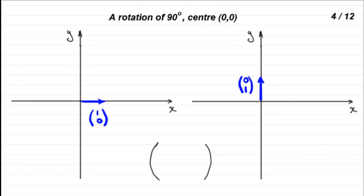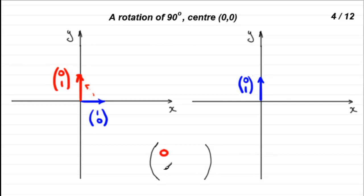Next is a rotation of 90 degrees, centre 0, 0. We take (1, 0) and rotate it anti-clockwise 90 degrees — it turns to the vector (0, 1). Then we take (0, 1) and rotate that 90 degrees, which brings it all the way down to the vector (−1, 0). So the matrix has columns (0, 1) and (−1, 0).